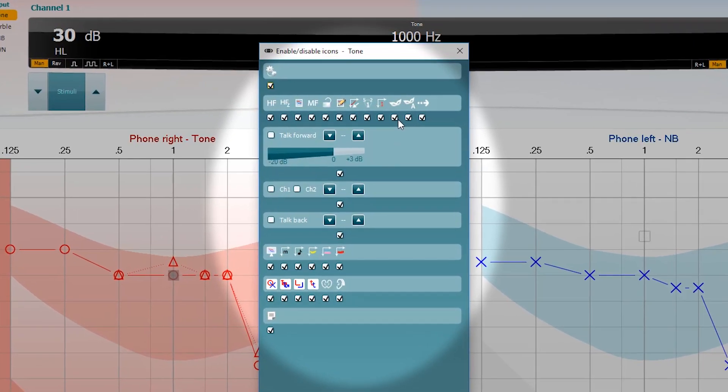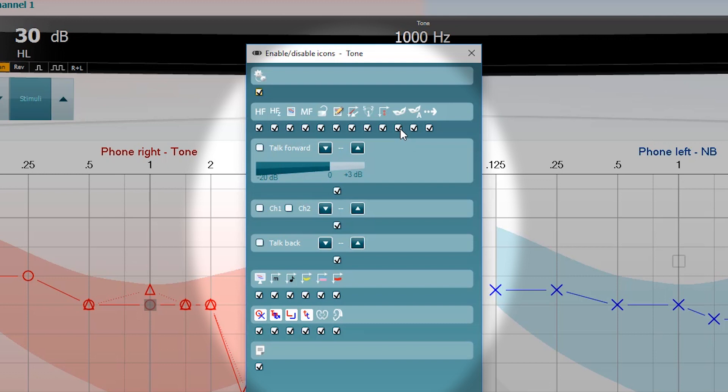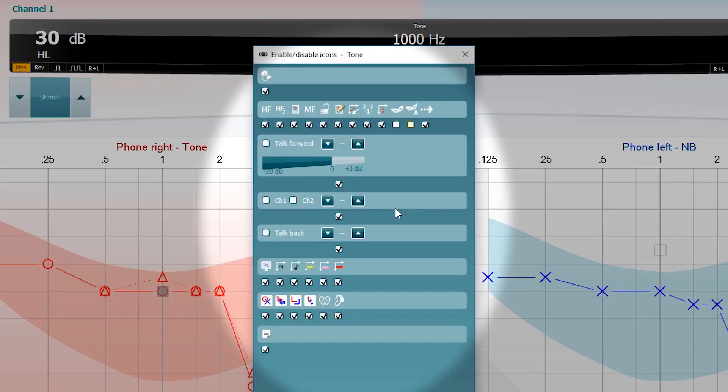For the benefit of this video, everything has been enabled at the start, but if you then want to turn certain features on and off, for example, I don't use the masking helper or auto-masker, and because I'm working in a scenario with my patient where they're sitting side-by-side with me, I can turn off my monitor function and the talkback microphone.